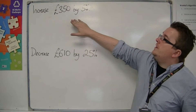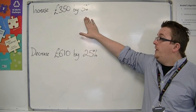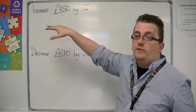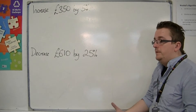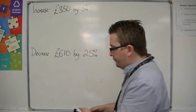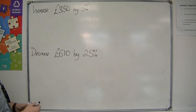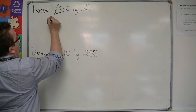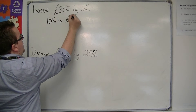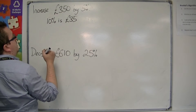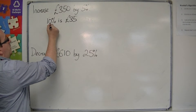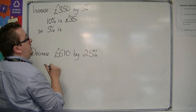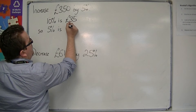If we want to increase £350 by 5%, what we need to do is work out what 5% of £350 is and then add it on. So we can work out what 10% is by dividing by 10, and then half that to work out what 5% is. So 5% is half of £35, which is £17.50.